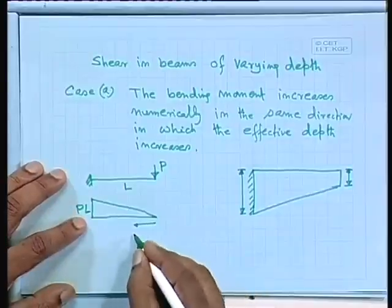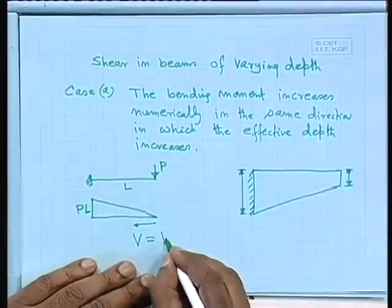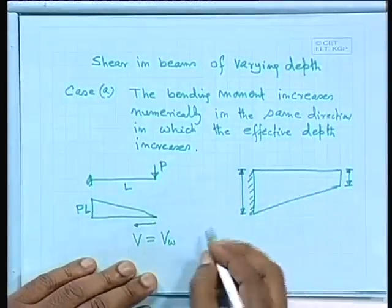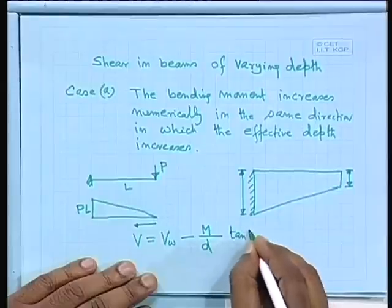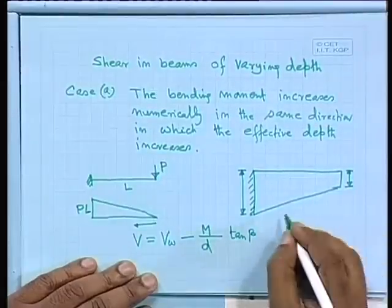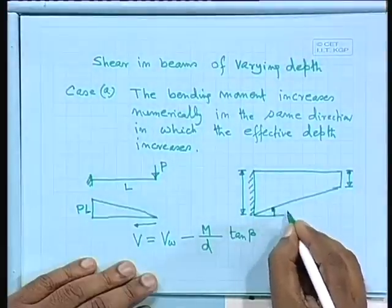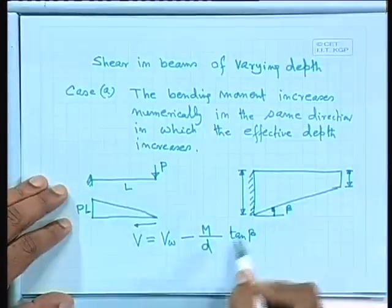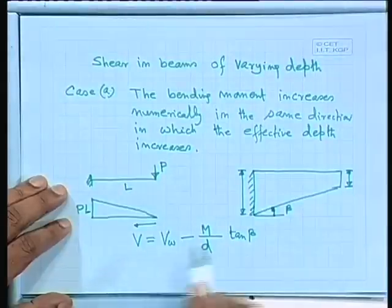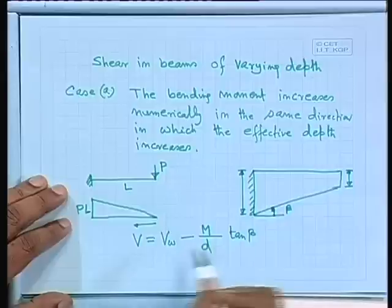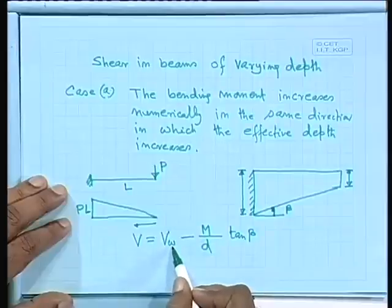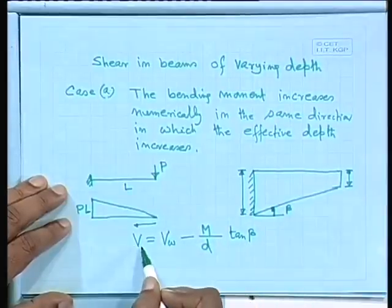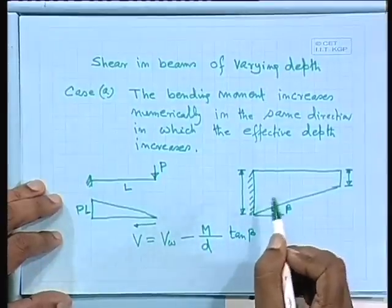In Case A, V equals V_w minus M/d times tan beta, where beta is the angle of the sloped beam. The shear force is modified due to the varying depth — the actual shear force V_w at that cross-section is reduced by M/d·tan beta to give the design shear V.